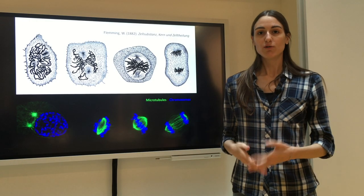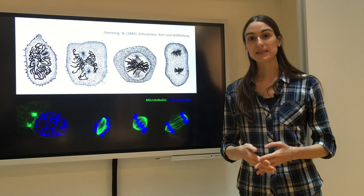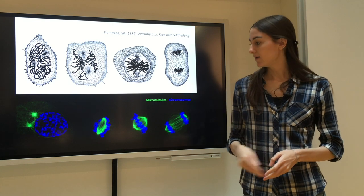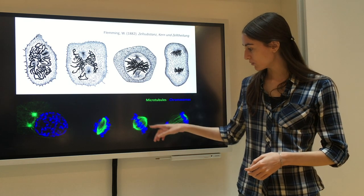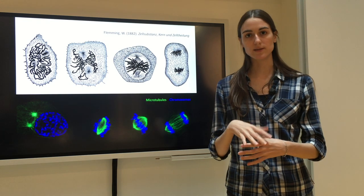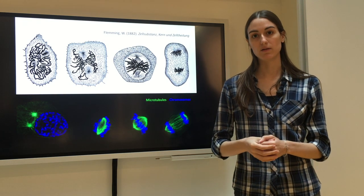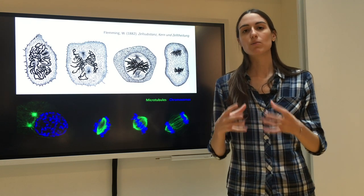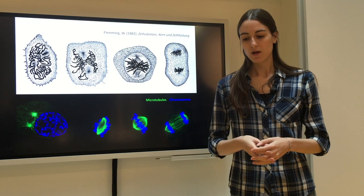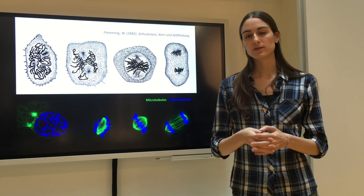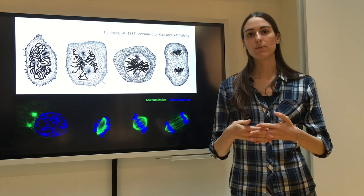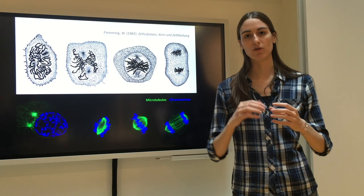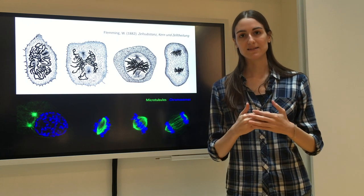Now we don't fully understand how this happens yet. For example, we don't know where exactly microtubules are generated. They can be generated at the spindle poles, around chromosomes, and also on the outer walls of pre-existing microtubules in a manner dependent on a protein complex called Augmin. But we don't know what number of microtubules is generated where. Also, we don't really understand how, once generated, microtubules can find the very small binding structures on the surface of individual chromosomes that they can attach to.